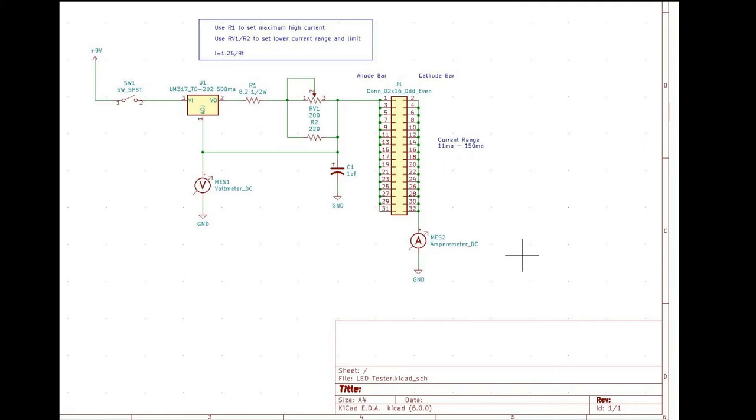I created a schematic design utilizing an LM317 in a TO202 case and used it as a constant current source, which can support up to 500 milliamps.